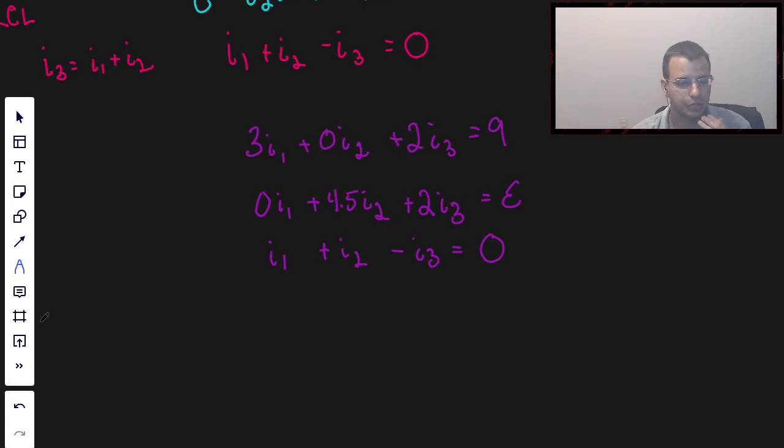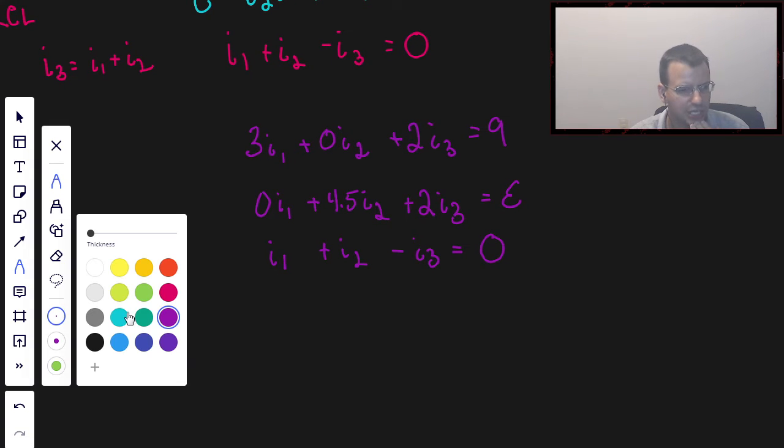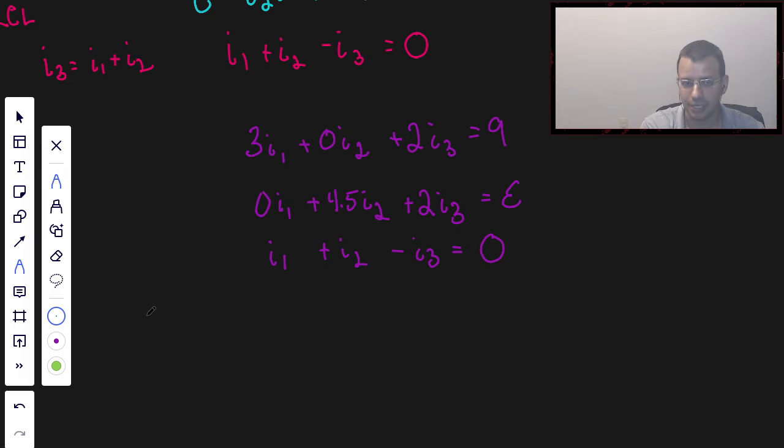Second equation is going to be 0I1 plus 4.5I2 plus 2I3 equals epsilon. And then we're going to have I1 plus I2 minus I3 equals 0. So now we have three equations, three unknowns, and I like the way they're set up.